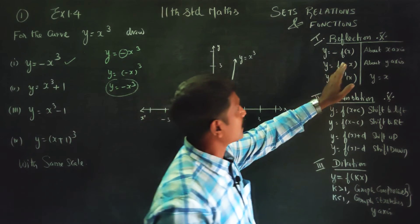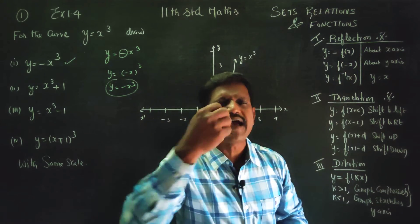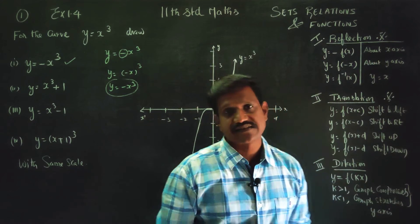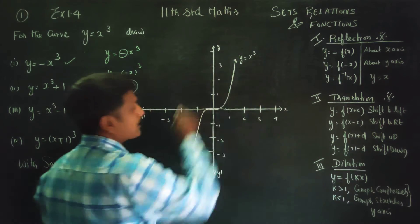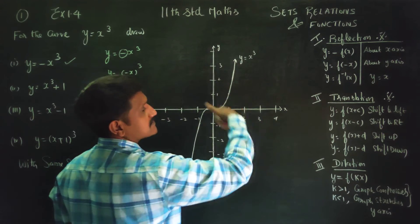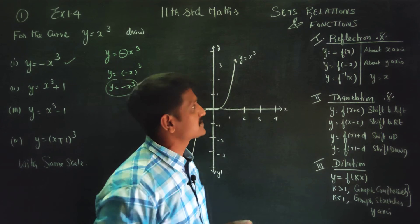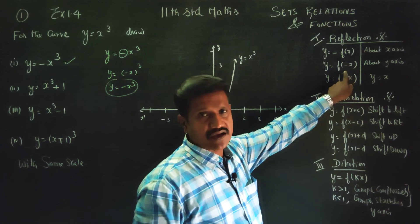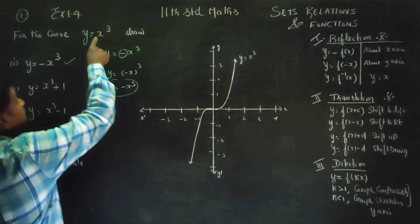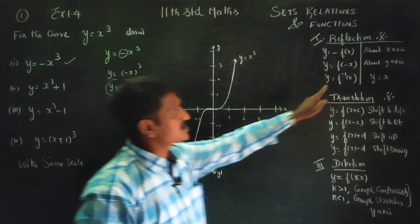Now come to reflection. When the function y = x³ becomes y = -x³ — meaning f(x) becomes -f(x) — it is a reflection about the x-axis. When x is replaced by -x in the function, meaning f(x) becomes f(-x), it is a reflection about the y-axis.